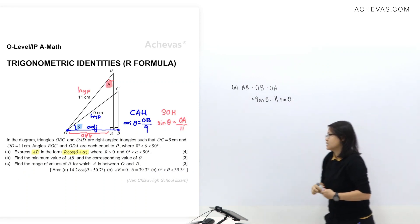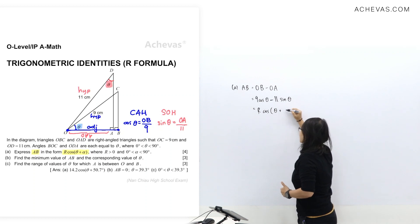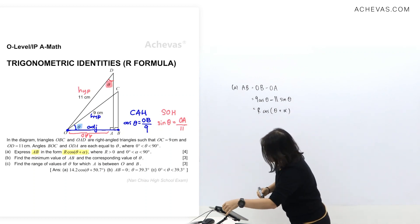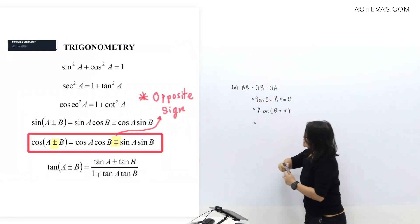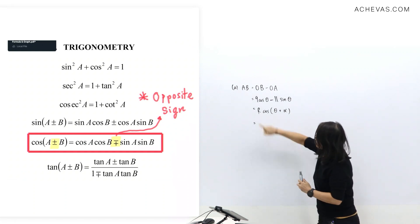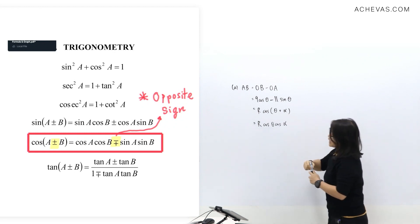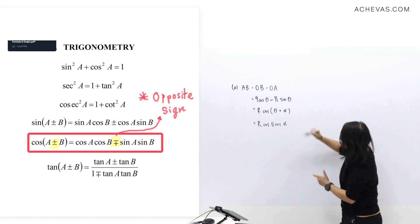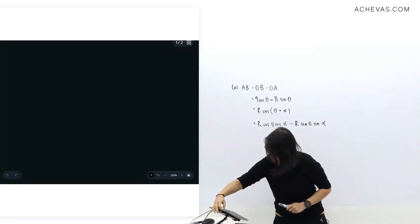So let's focus on part A now. We are asked to write in the form of R cos theta plus alpha. Now let's take a look at the formula page for this one here. So for this one here, we'll be having cos A cos B, but remember there's an R here. So I'm going to place R cos theta cos alpha and opposite sign. So this is plus, I'm going to place minus, and again I'm going to place R as well. So then I'll take sin theta sin alpha.